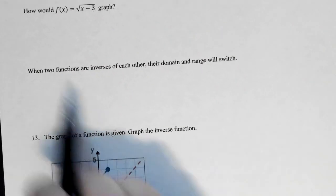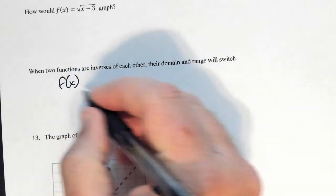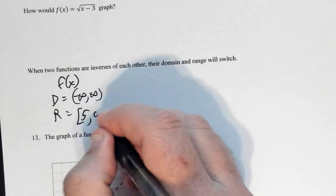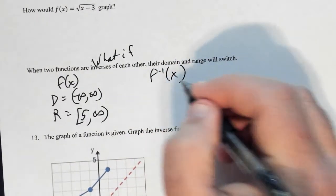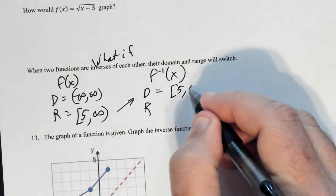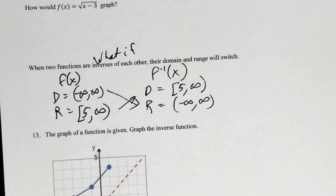When two functions are inverses of each other, their domain and range switch. For example, if a function has domain (−∞, ∞) and range [5, ∞), then its inverse will have domain [5, ∞) and range (−∞, ∞). This holds for any function and its inverse — domain and range always flip.